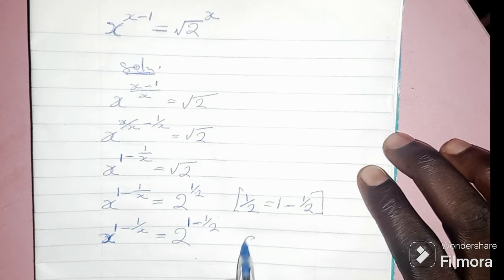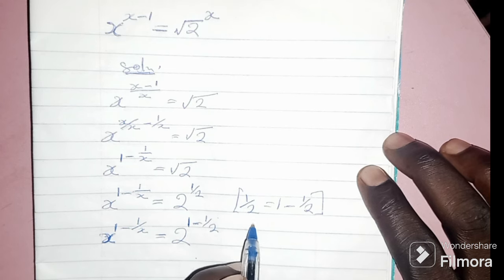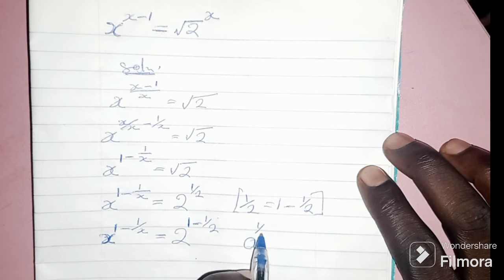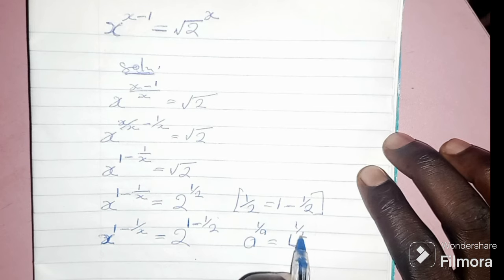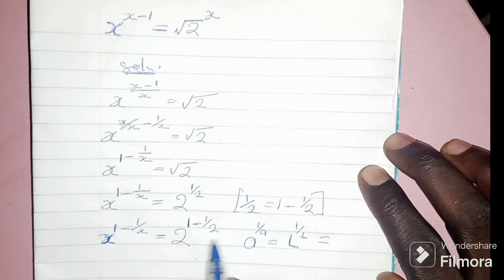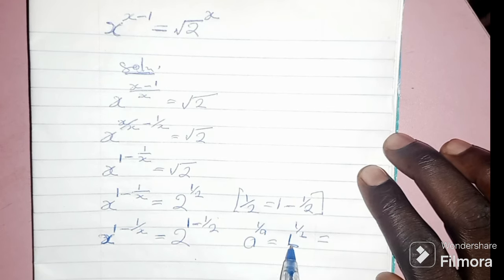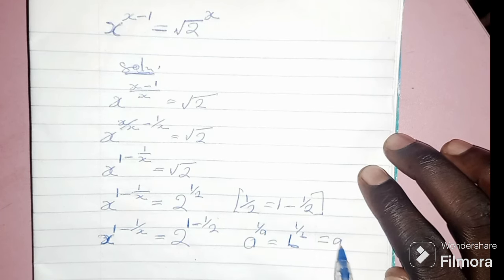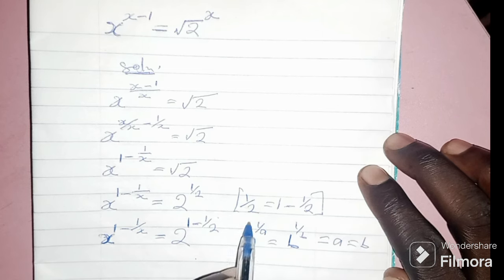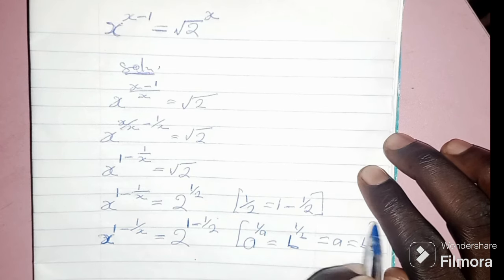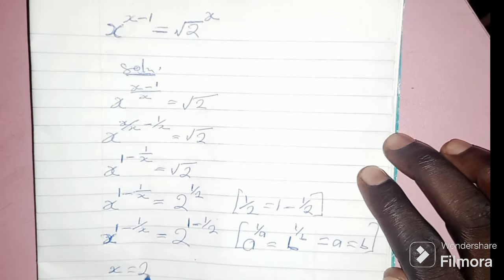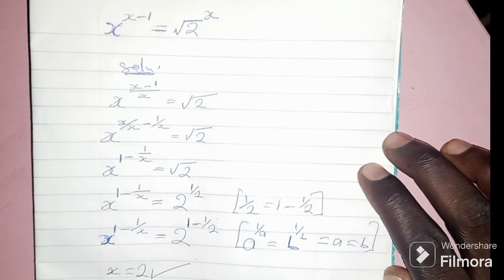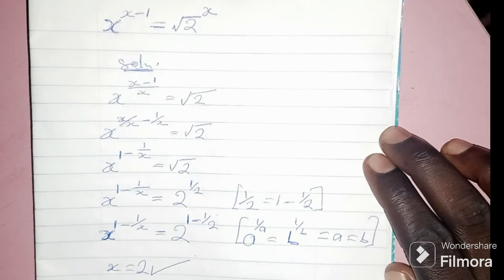When a to the power of 1 over a equals b to the power of 1 over b, it automatically means a is equal to b. So in this case, x is equal to 2. Thank you so much.